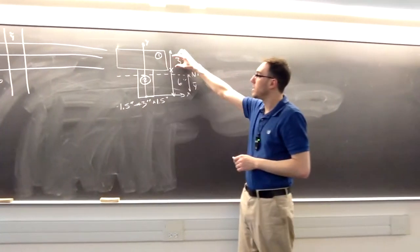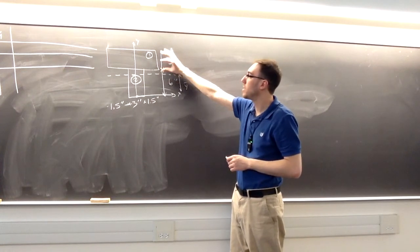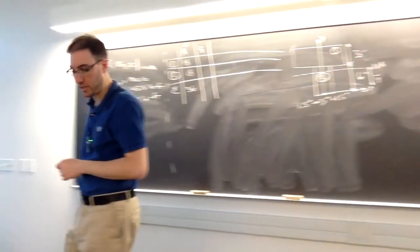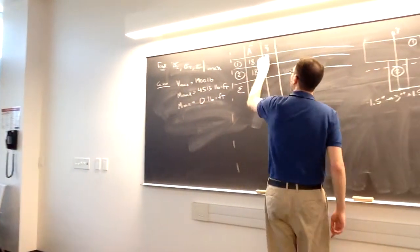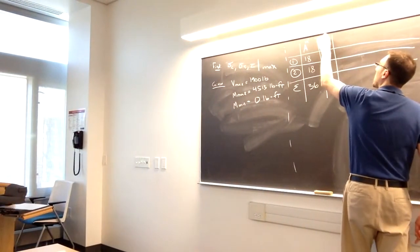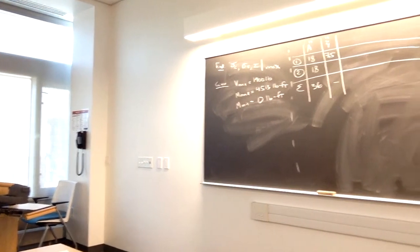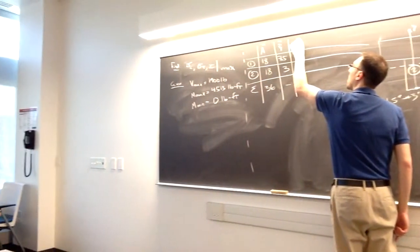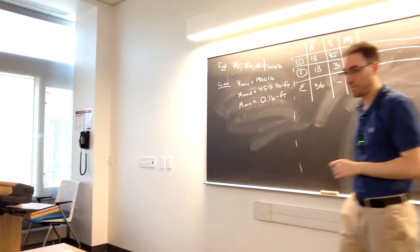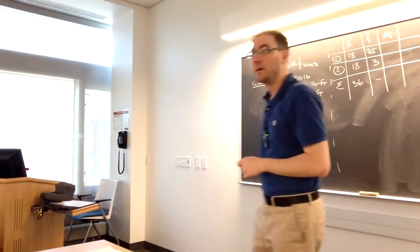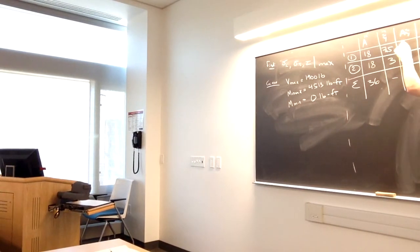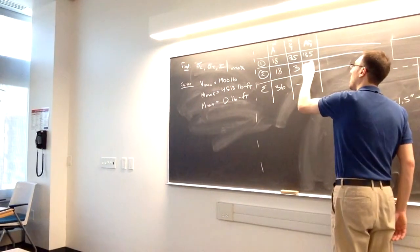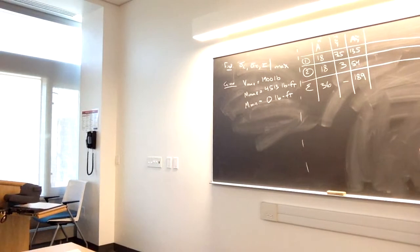The neutral axis passes through the centroid. For the Y-tildes, I want to know where each shape's centroid lies with respect to the origin at the bottom. For shape number one, it's 1.5 inches from the bottom of the shape plus six inches, giving 7.5 inches above the x-axis. Shape two's centroid is 3.5 inches above the x-axis. Taking the product of A and Y gives 135 and 54, totaling 189 inches cubed.